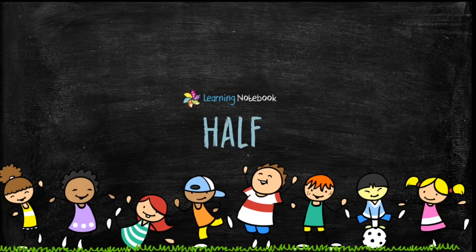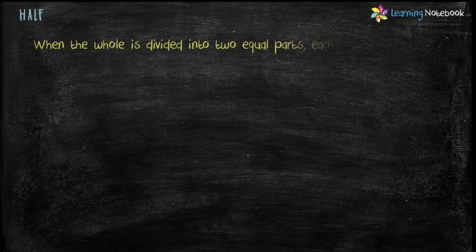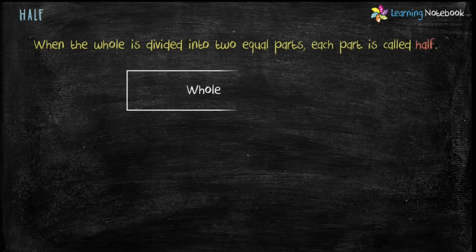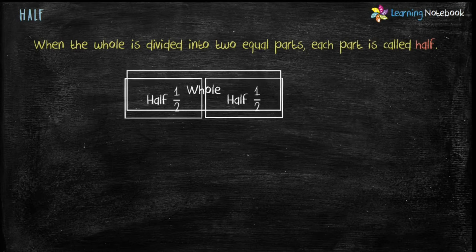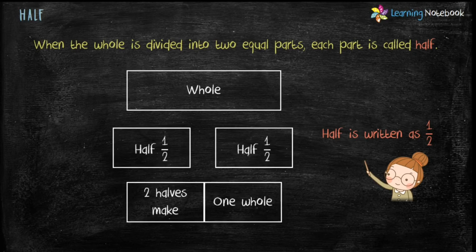Now let us understand what is half. When the whole is divided into two equal parts, each part is called half. Half is written as 1 by 2. Two halves make one whole.